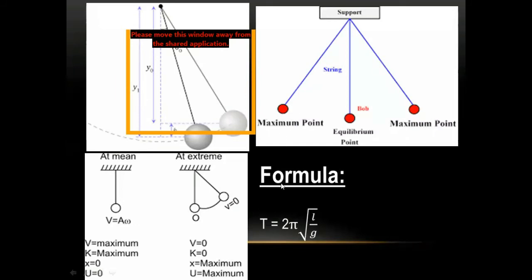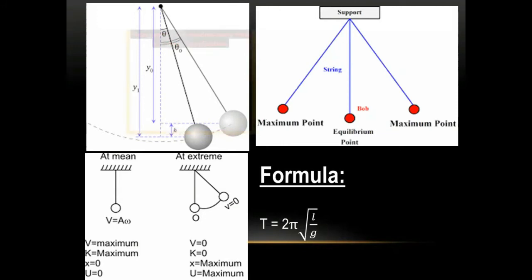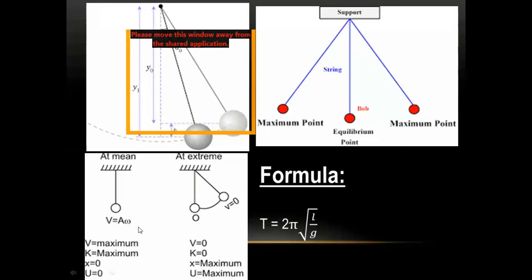To summarize the characteristics of simple harmonic motion: First, the body executes to-and-fro motion, as seen in the pendulum diagram. Second, velocity is maximum at the mean position and zero at the extreme position, as shown in the diagram.